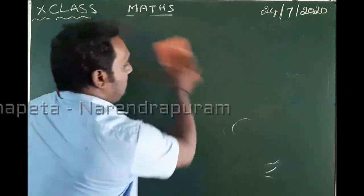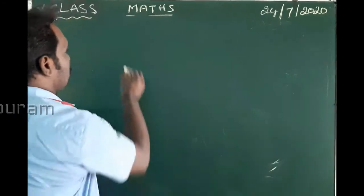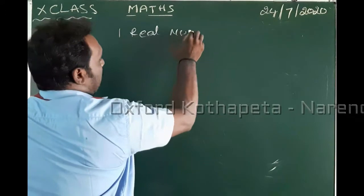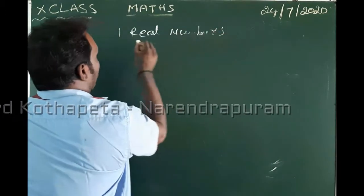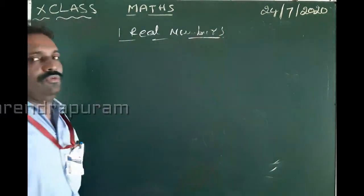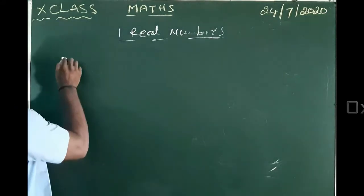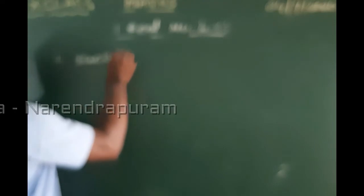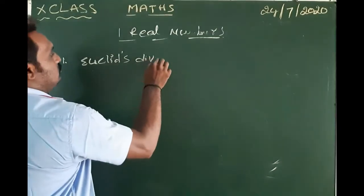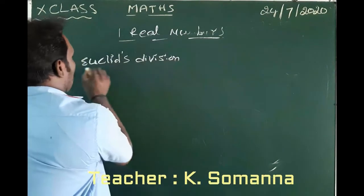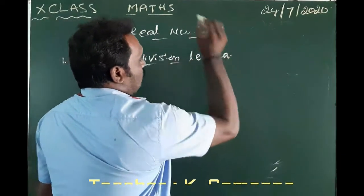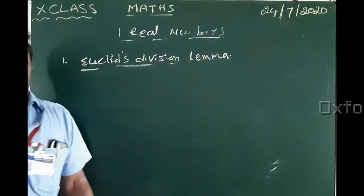R is real numbers. This is 1st chapter: Real Numbers. The first topic is Euclid's Division Lemma.